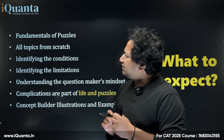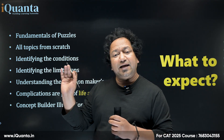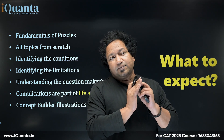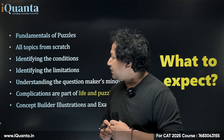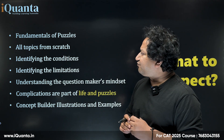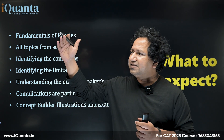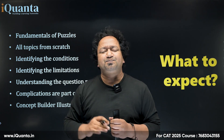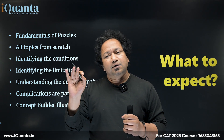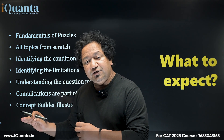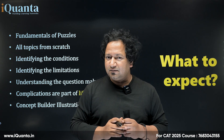Then all the topics from scratch — all topics of LR and DI. It will be close to 12 to 15 topics which we're discussing here. Then identifying the conditions. Any kind of puzzle, essentially, logical reasoning puzzles were used to test the intelligence quotient of people.